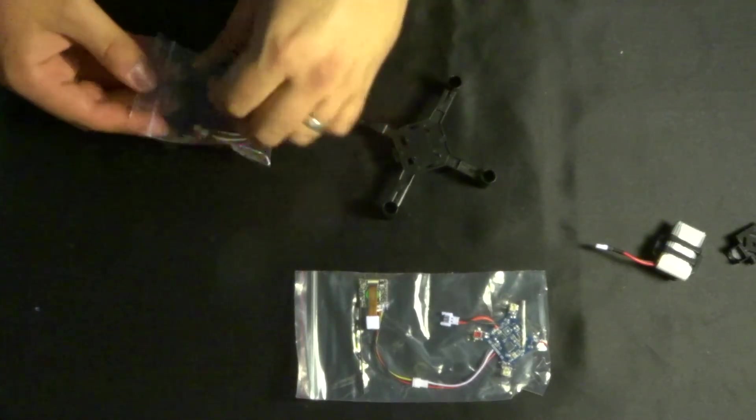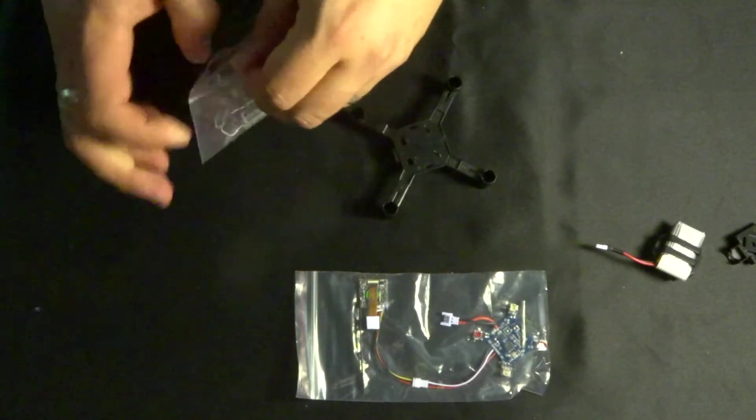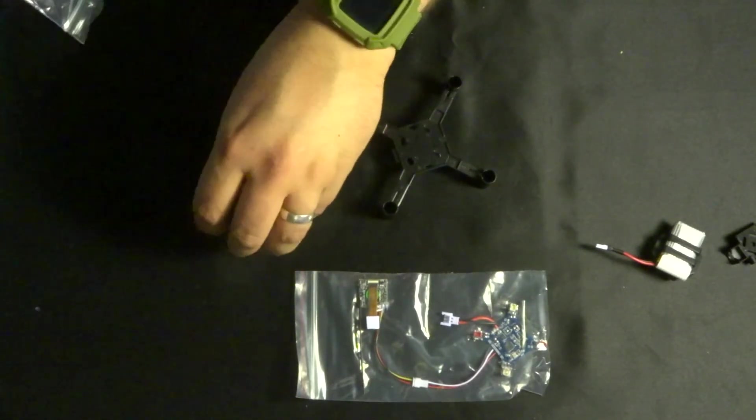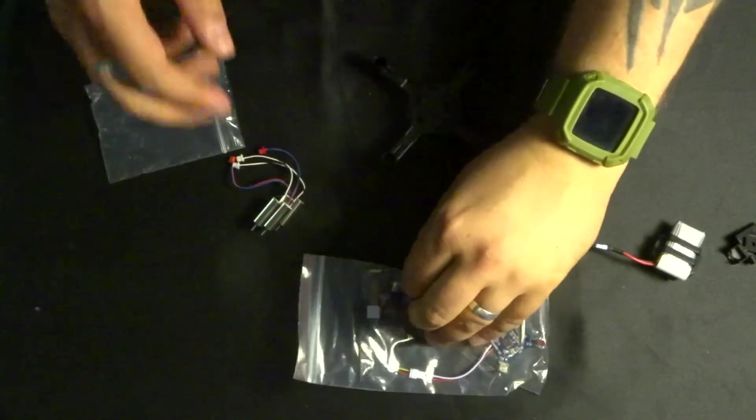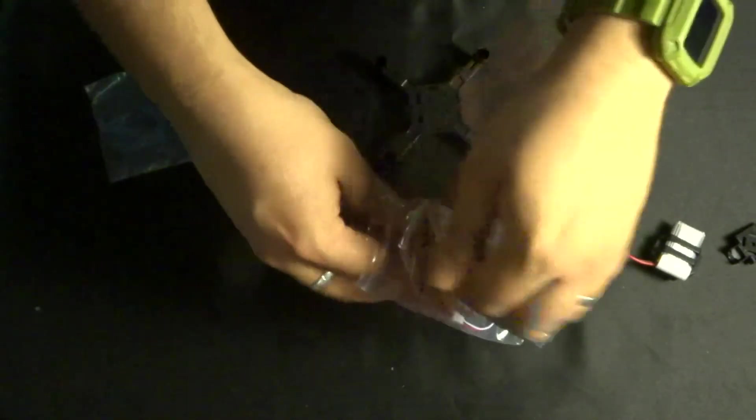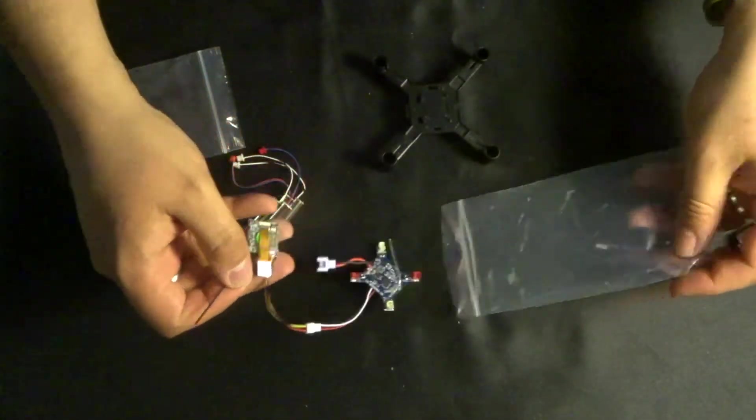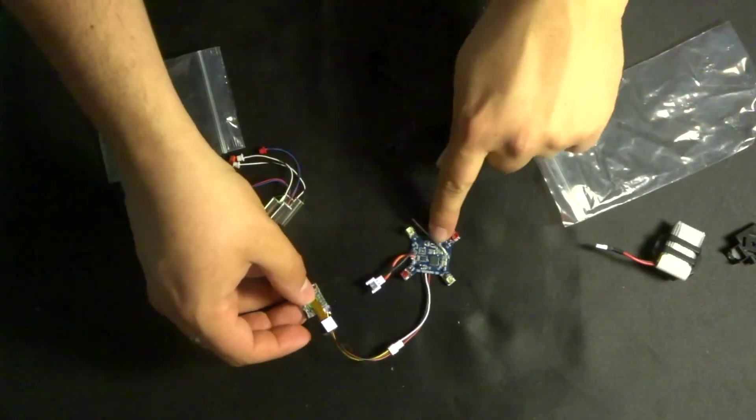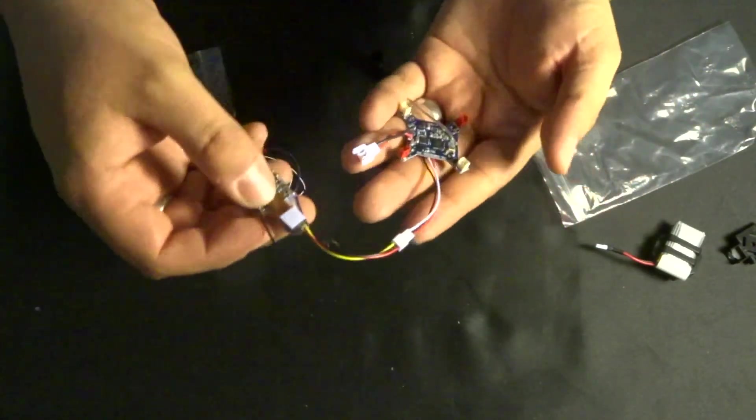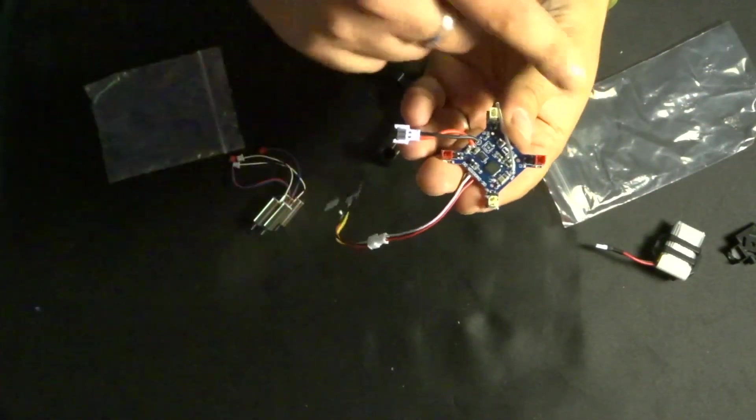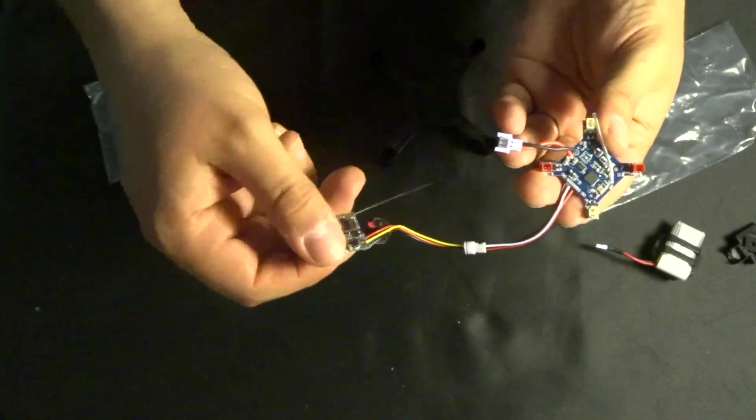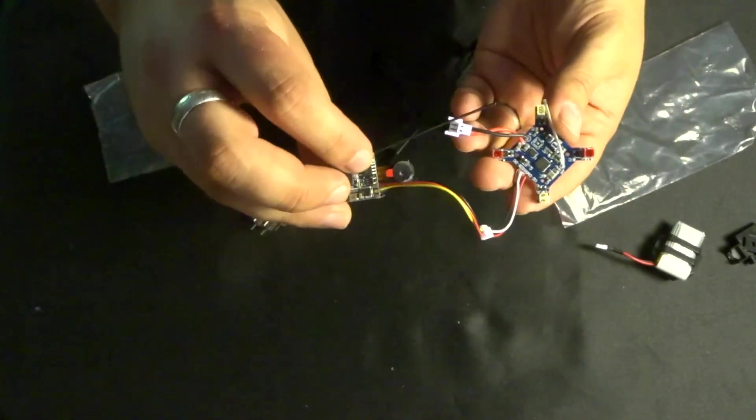In this other bag here we've got the four little motors sitting there quite nicely, and then in this bag here we have a little PCB where the motors will connect to, as well as a little FPV camera sitting right there as well.